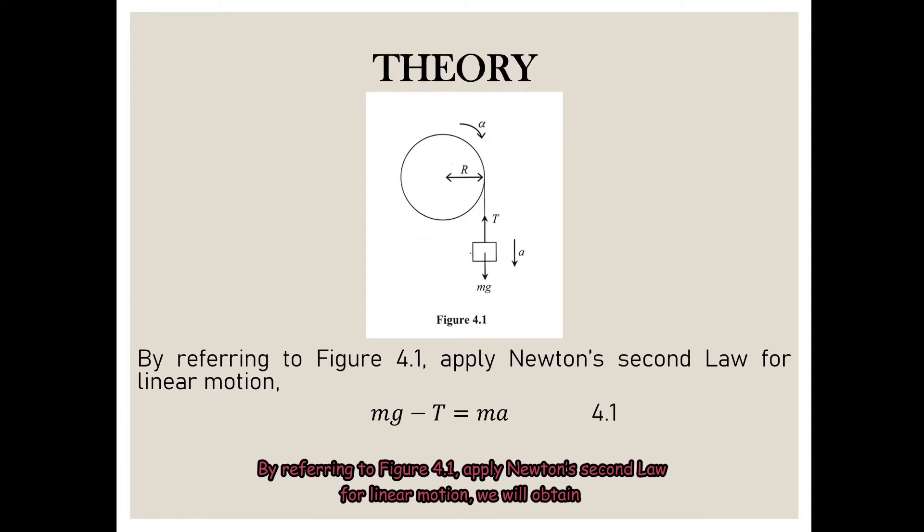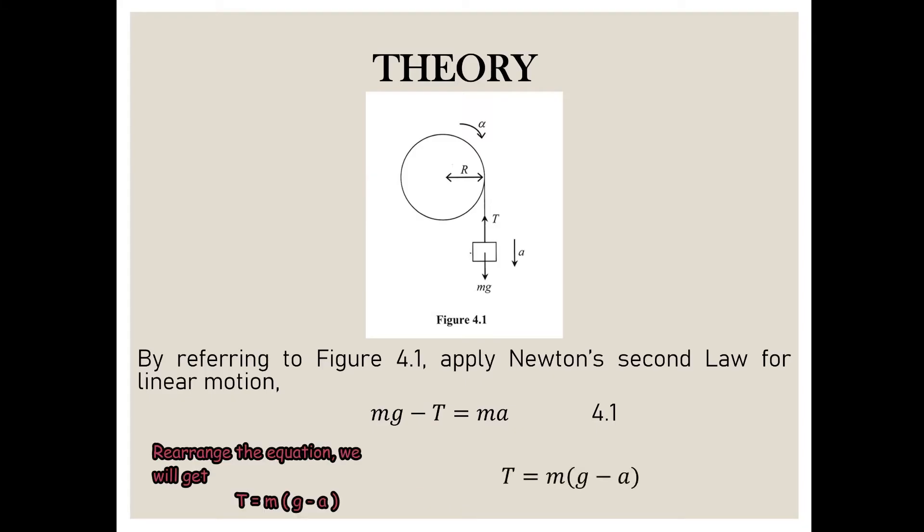By referring to figure 4.1, applying Newton's law for linear motion, we will obtain Mg minus T equals Ma. Rearranging the equation, we get T equals M times (g minus a).